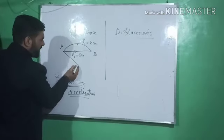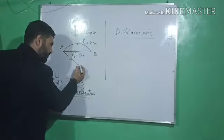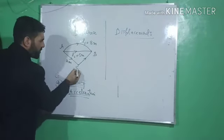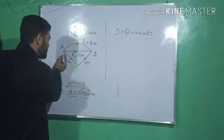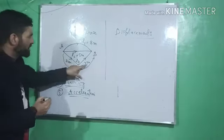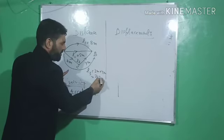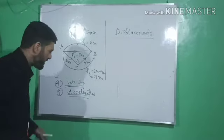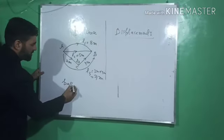Let's take another path: if the body goes from A to C and then from C to B, suppose it covers 3 meters from A to C and 4 meters from C to B. Let this path be L3, so L3 = 3 + 4 = 7 meters. So in the third case, the path length is 7 meters. Distance is simply the actual path length traveled.